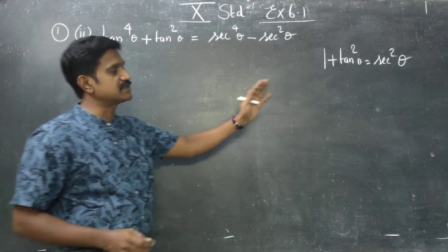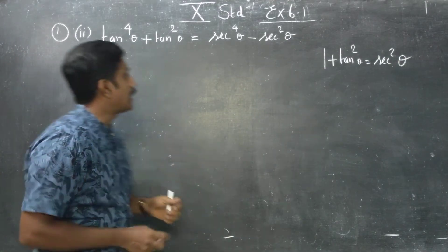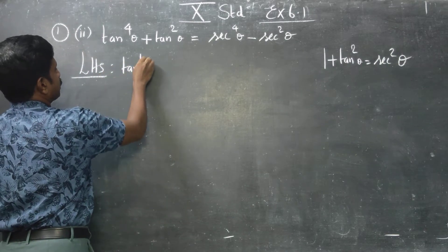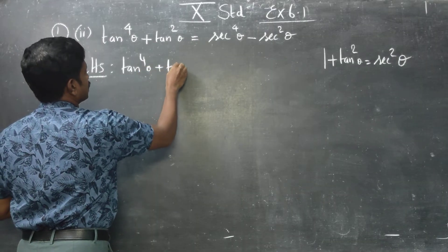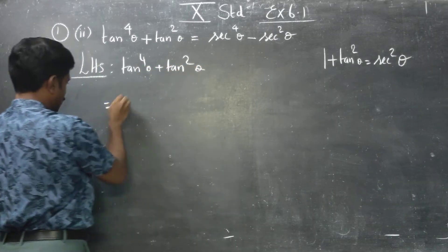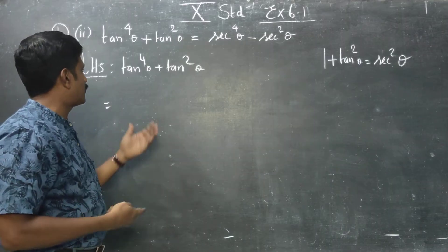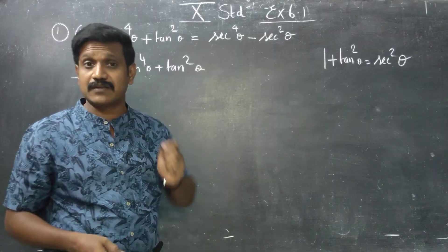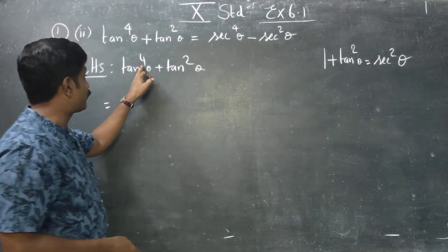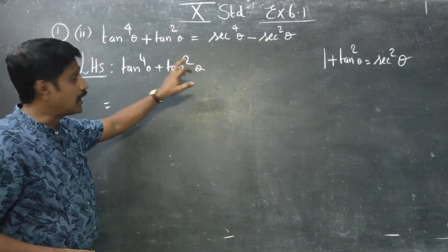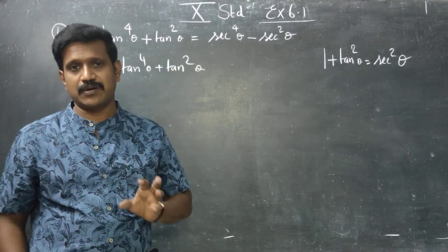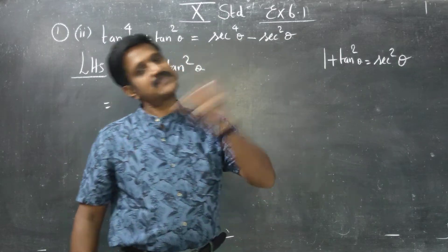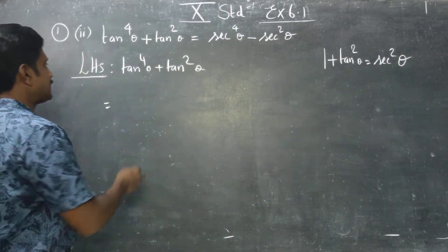In the identity, in this sum, I am going to start from the LHS. LHS is tan power 4 theta plus tan square theta. We take tan square theta as common: tan square theta times (1 plus tan square theta). Again, 1 plus tan square — this matches our identity.